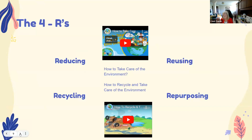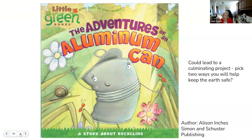There are four R's. Students are tasked with looking around their environment to see how well they are stewards of the land — in the school and on the playground. We ask them to understand what reducing, recycling, reusing, and repurposing mean, and there are videos linked to that. There's also a suggested book — the adventures of the life of an aluminum can — which talks about the can getting lost and dropped on the ground. It's a way to introduce literature into the classroom while gleaning information and getting student feedback.